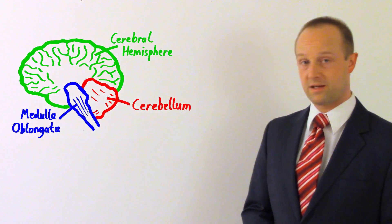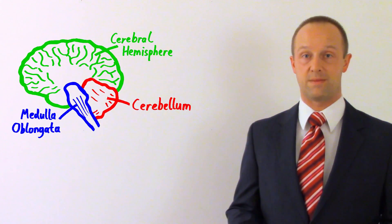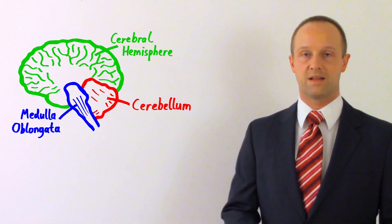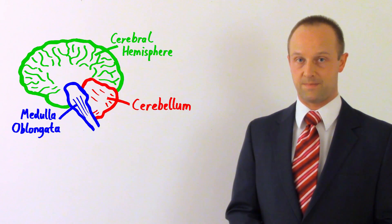There are just three key parts you need to know about: the medulla oblongata, the cerebellum, and the cerebral hemispheres. Let's start with the medulla oblongata.